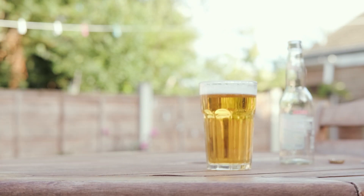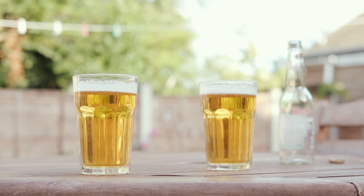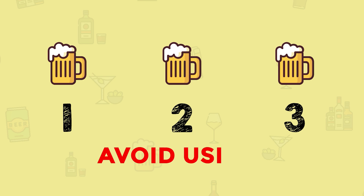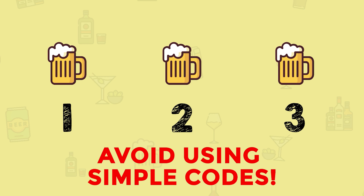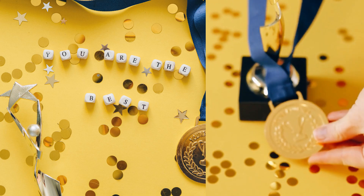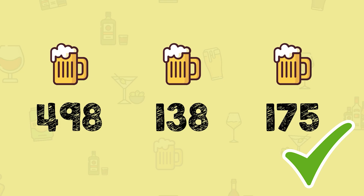Going back to how we're presenting the samples, we'll want to code our samples so that our panelists don't know what we're giving them. You might be tempted to code your samples as 1, 2, 3, 4, 5 or A, B, C, D, E, F, G — but you should avoid coding your samples with single-digit or double-digit numbers and letters. Tasters might subconsciously choose sample 1 because number 1 is associated with first place or the best. Instead, we should give our samples a random three-digit number code, like 345 or 521.